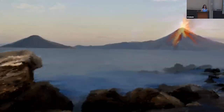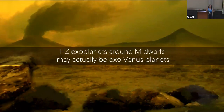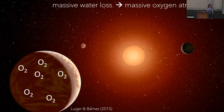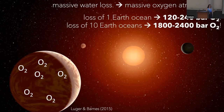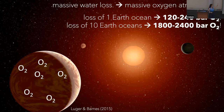So exoplanets like the TRAPPIST planets orbiting in the habitable zone, if they formed there or have been there long enough without late volatile delivery, could actually be exo-Venus planets — even the planets in the habitable zone. What's even more concerning is that these planets might actually have massive amounts of abiotically produced oxygen in their atmospheres through massive water loss processes. People have estimated they could have hundreds to even thousands of bars of oxygen, though these estimates don't account for subsequent oxygen sinks like the crust or mantle.